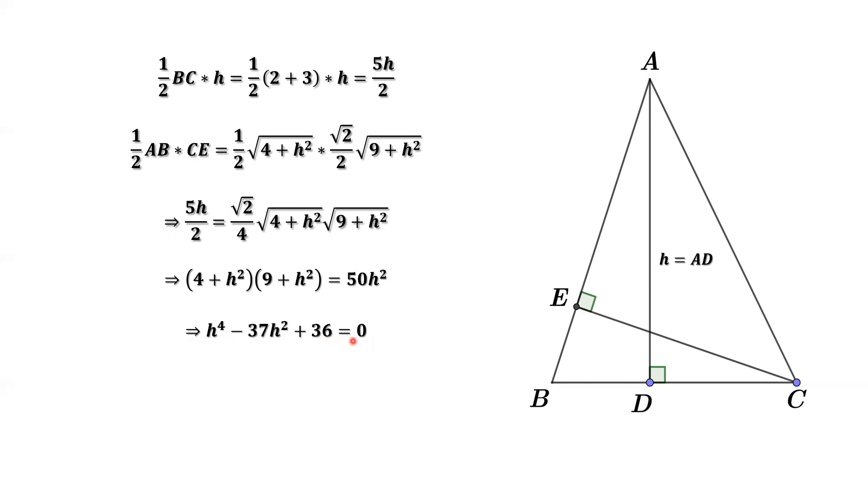What are we doing here? We want to find H. If we know H, we have the base, 2 plus 3. We can find the area of this triangle. Factoring the left-hand side we have H square minus 1 times H square minus 36 equals 0.